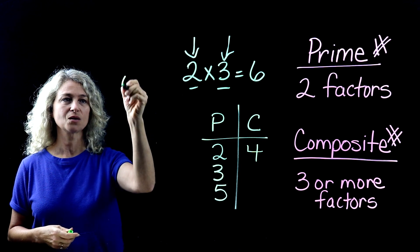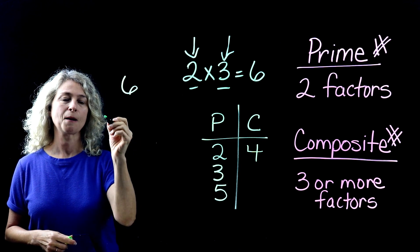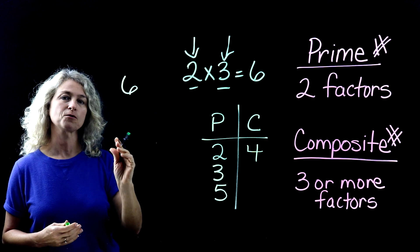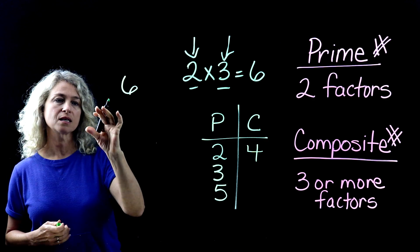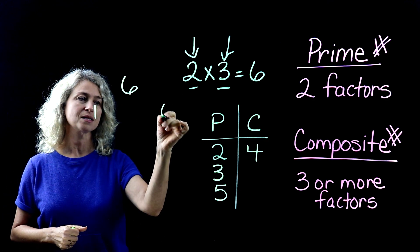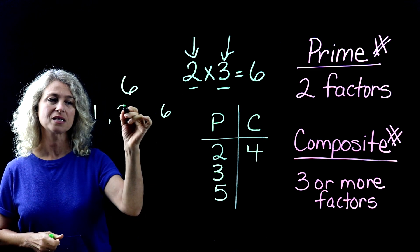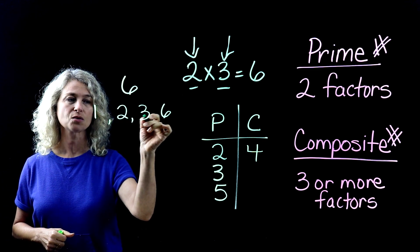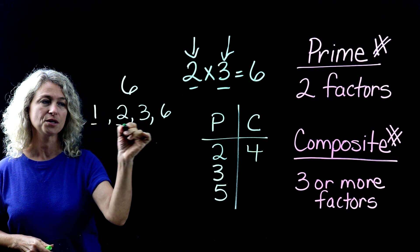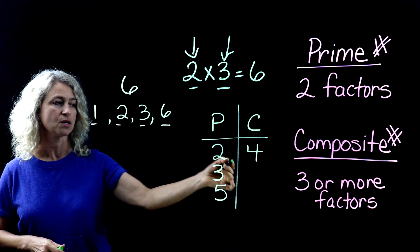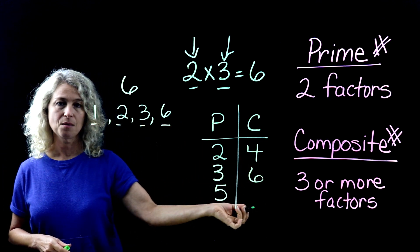So let's take a look quickly at the number six. Listing the factors out for six. We can list them as one times six. But we also can say two times three. And we have one, two, three, four factors. So this is going to be a composite number.